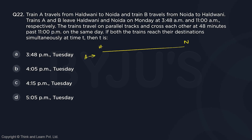Train A is going this way and Train B travels from Noida to Haldwani, so B is coming this way. A and B leave Haldwani and Noida on Monday at 3:48 a.m. and 11 a.m. respectively.